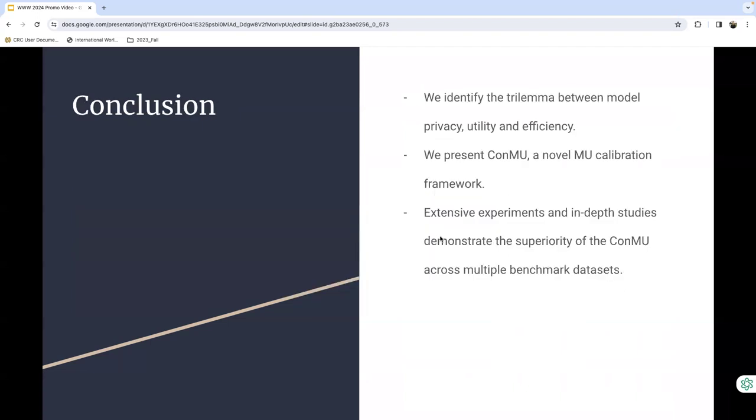In conclusion, we identify the trilemma between model privacy, utility, and efficiency that exists in machine unlearning for deep neural networks, and future works could focus on extending the work to NLP and graph domains.